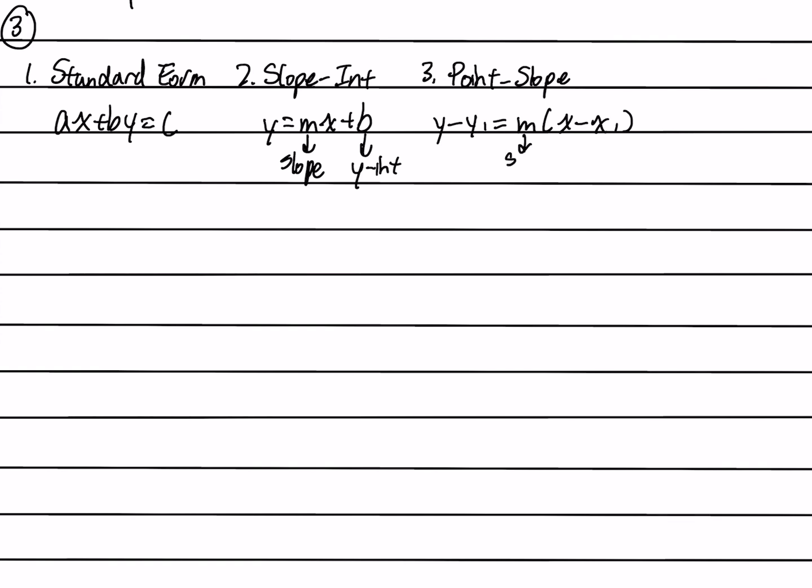In this case, m again represents slope. And x1 represents the x-coordinate. And y1 represents the y-coordinate that corresponds with this x-coordinate.